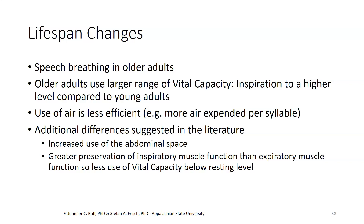Speech breathing is also different in older adults. Older adults use a larger range of their vital capacity, with inspiration to a higher level compared to young adults. Their use of air also appears to be less efficient — for example, more air is expended per syllable in older adults than in younger adults. There appears to be increased use of the abdominal space, and a greater preservation of inspiratory muscle function relative to expiratory muscle function, so older adults would be motivated to use less of the vital capacity below the resting level in order to use their most effective muscles.